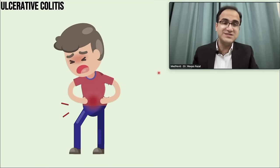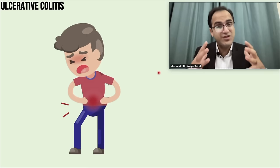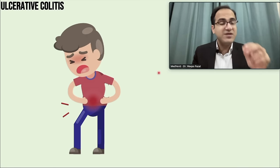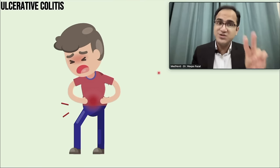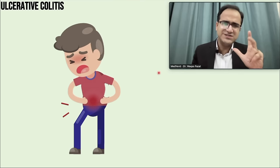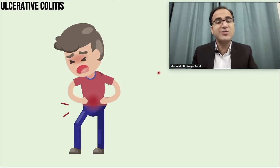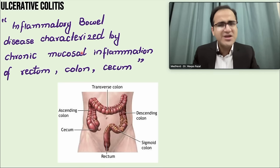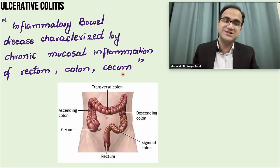What is inflammatory bowel disease? Inflammatory bowel disease is a condition in which there is inflammation of the intestines. Among the inflammatory bowel diseases, we have two main conditions: ulcerative colitis and Crohn's disease. Ulcerative colitis is an inflammatory bowel disease characterized by chronic mucosal inflammation of the rectum, colon and the cecum.